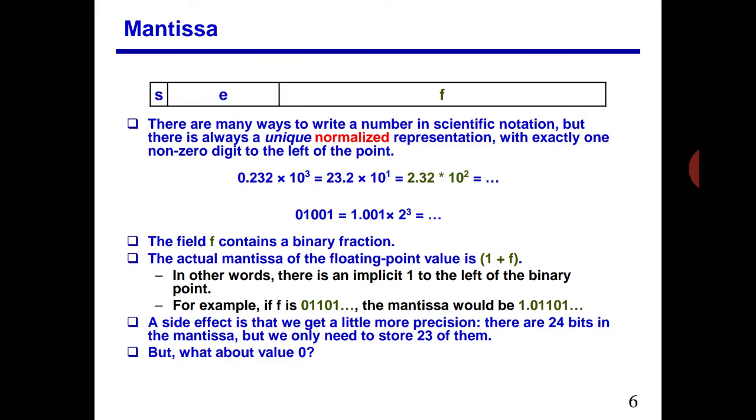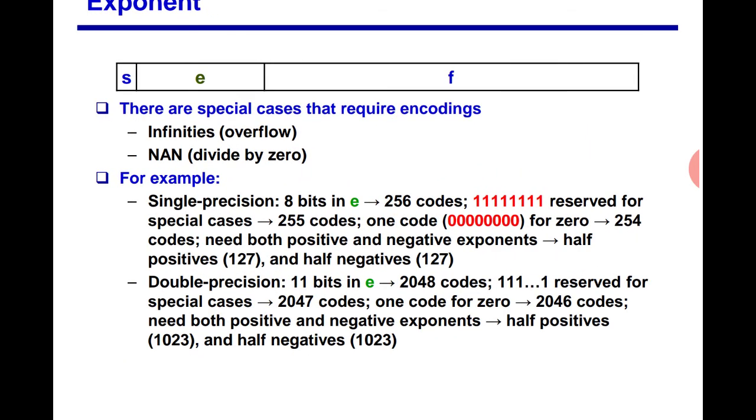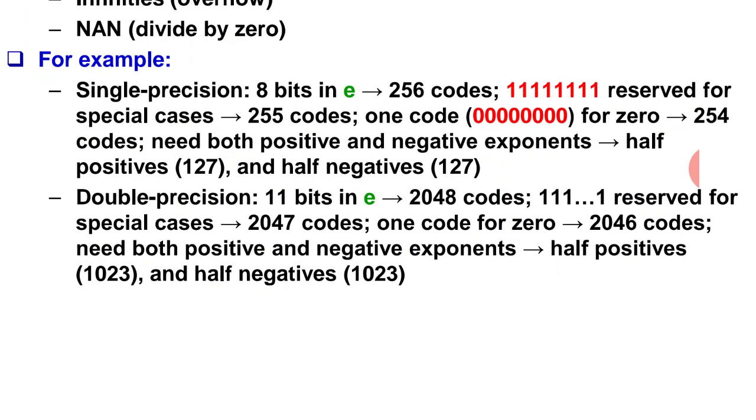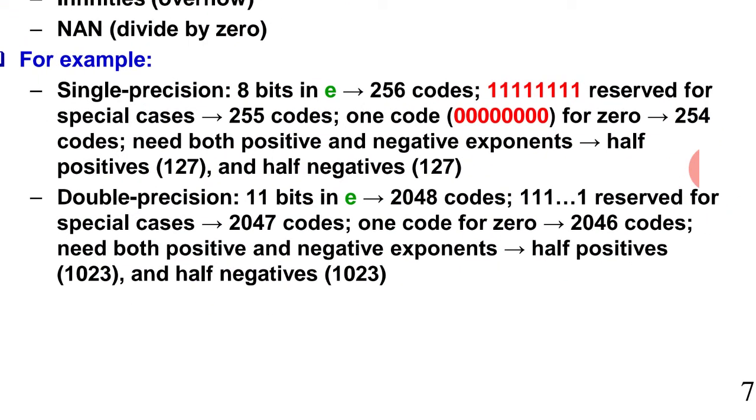But what about zero? How is zero represented? They have taken different cases here. For example, in single precision, if the exponent is 8 bits, there are 256 codes. The standard is to use all ones, all 8 bits one for special cases. Zero is also reserved for special case. 255 code, one code for zero. All ones are fixed for 255, and total codes are 256, from 0 to 255. So last 255 if exponent value is, then all ones. If zero, then all zeros. For these, we don't add any bias.